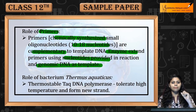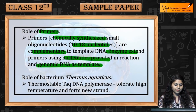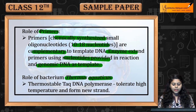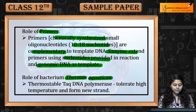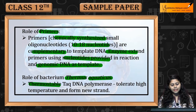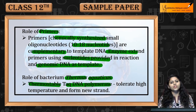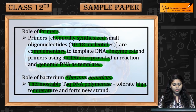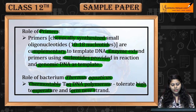Role of bacterium Thermus aquaticus in PCR: यह thermostable है — thermostable TAC DNA polymerase है. यह tolerate करता है high temperature को and form करता है new strands को.